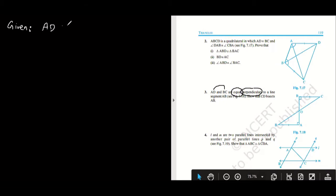Second information: they are perpendicular. What do you mean by perpendicular? They are at 90 degrees. So let's read it carefully—are perpendicular to a line segment AB.